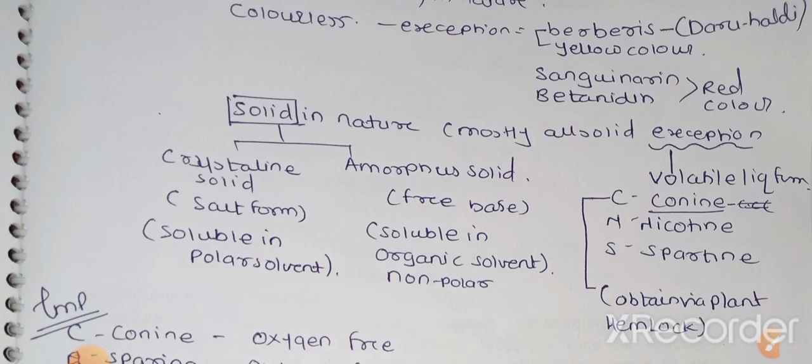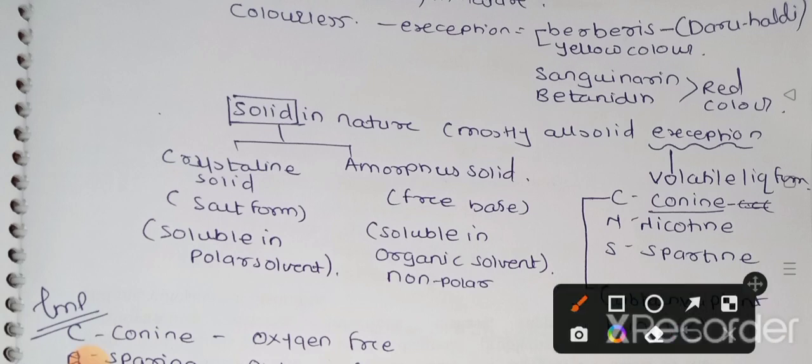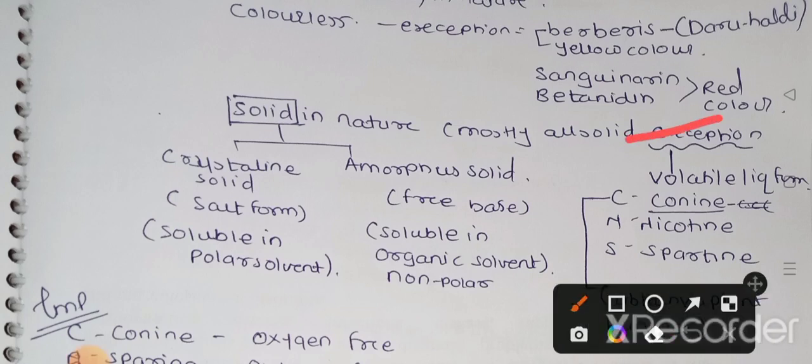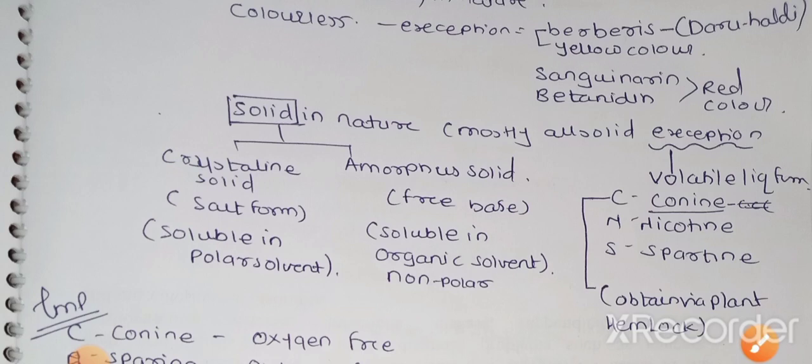This is not enough, but there is an exception: volatile liquids in the form of alkaloids are also present. Which alkaloid is present here? You have to remember CNS - coniin, nicotine, and sparteine. These three drugs or chemical constituents present in the drug are available in volatile liquid form. You have to remember coniin is the chemical constituent of hemlock plant.